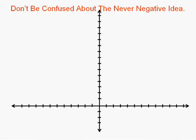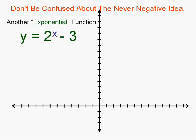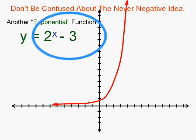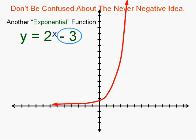Now don't be confused about this never negative idea. For instance, if we look at the same function but let's add a negative 3 on the end of it. That's where y equals 2 to the x. If we look at what y equals 2 to the x minus 3 is. What's that going to do to the graph of the function? Well, it's going to lower it 3, isn't it?